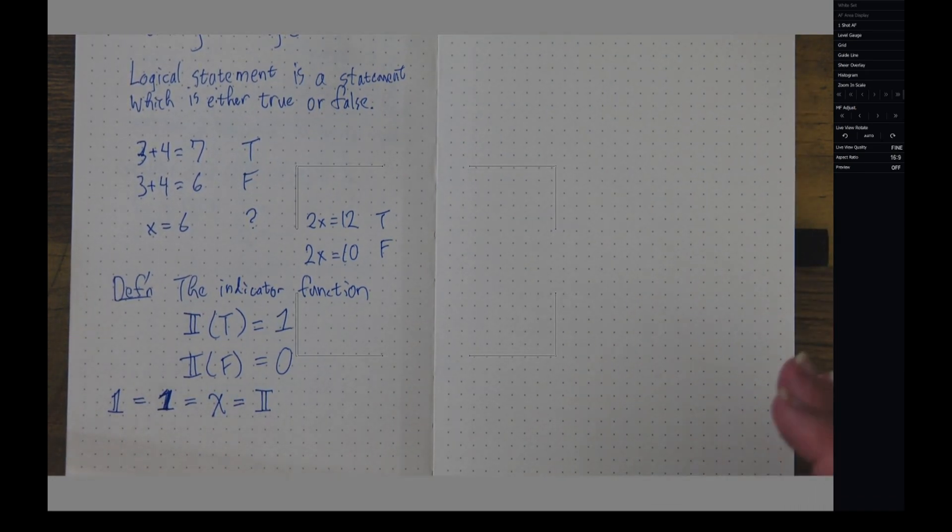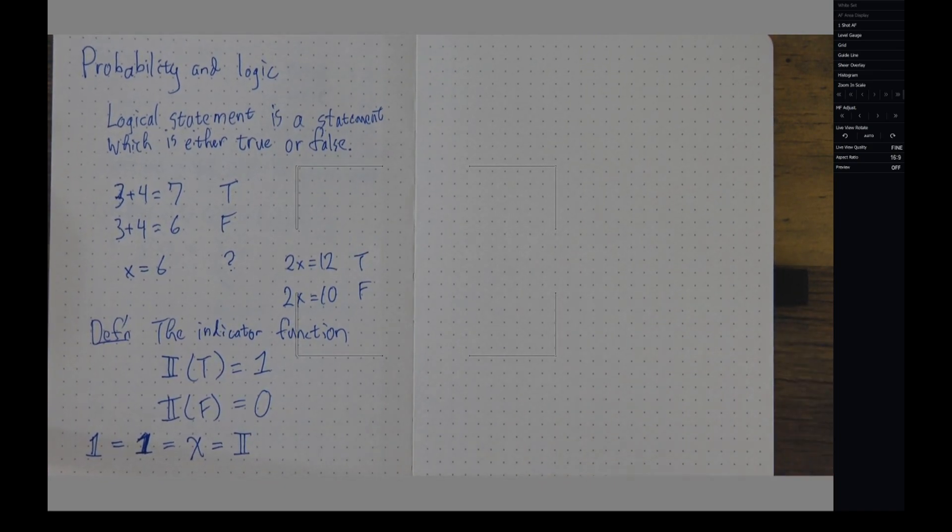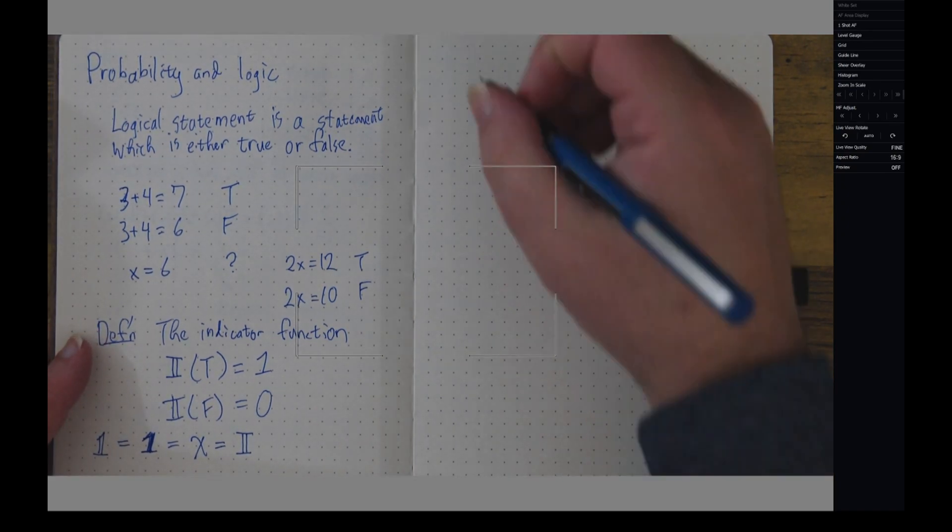Now, one nice thing about the indicator function that I should point out is that it allows me to count the number of true statements in a collection of logical statements.